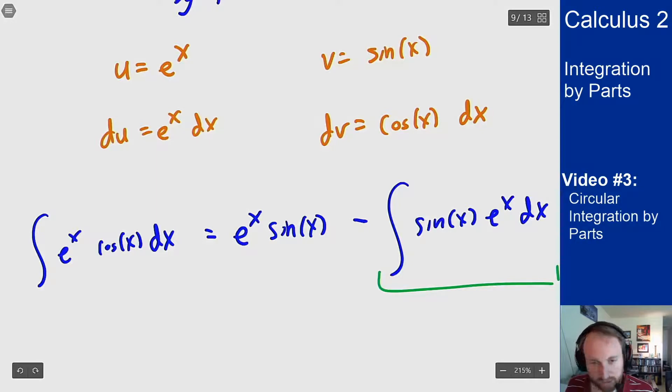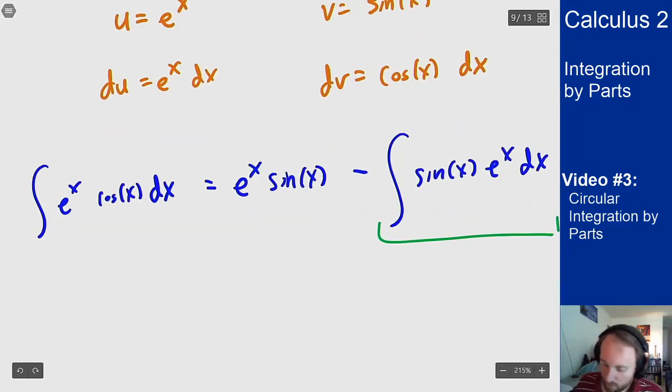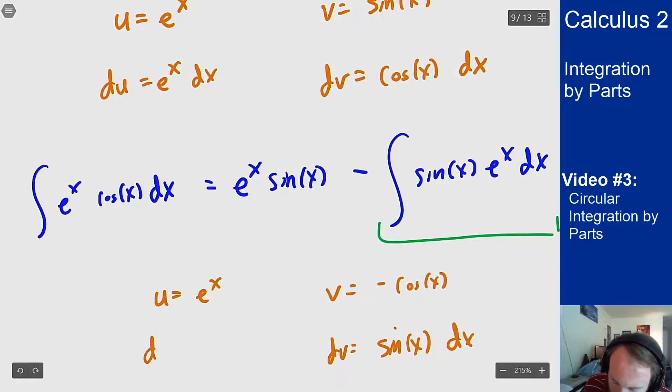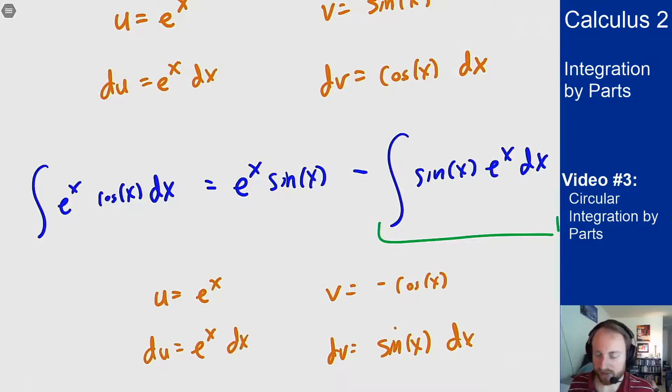This is also a product so it should again be integration by parts and I need to make the same choice for my u and my dv that I made before. E to the x should still be u and the trig should still be the v and dv terms. So we're going to make for this integral u is again e to the x and dv is going to be sine of x dx. I can then fill in the table so v is minus cosine and then du is e to the x dx.